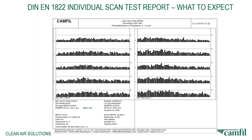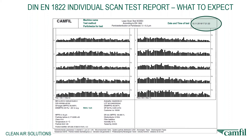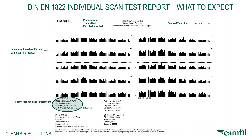On those test certificates, what should you typically get? It's got to tell you how the test is being carried out — so according to what standard, in this case EN1822. It's got to give you the type of equipment used, the laser scan test, and give you a particle distribution at a number of particle sizes. It must give you the date and time of the test, where it was carried out, when it was carried out. It should also give you the minimum and maximum particle count over the time intervals of the test.